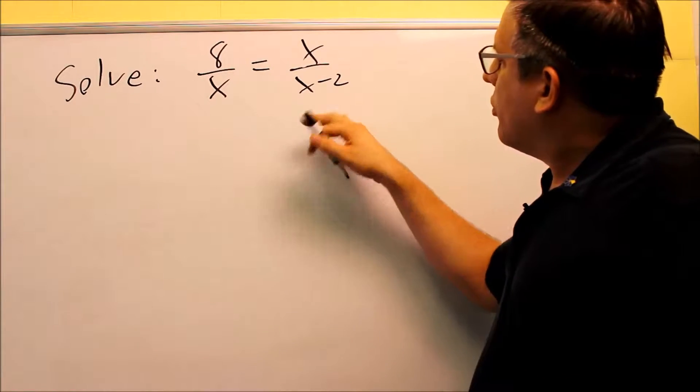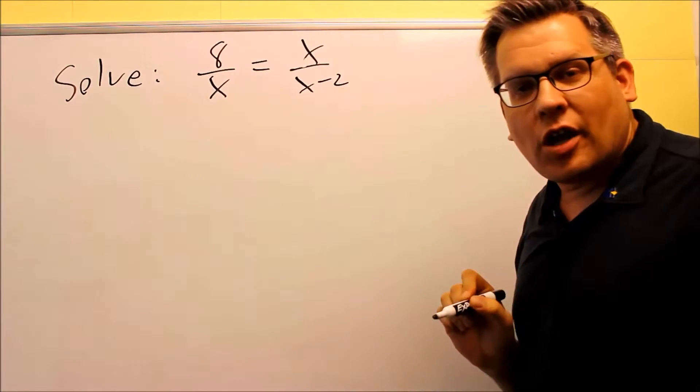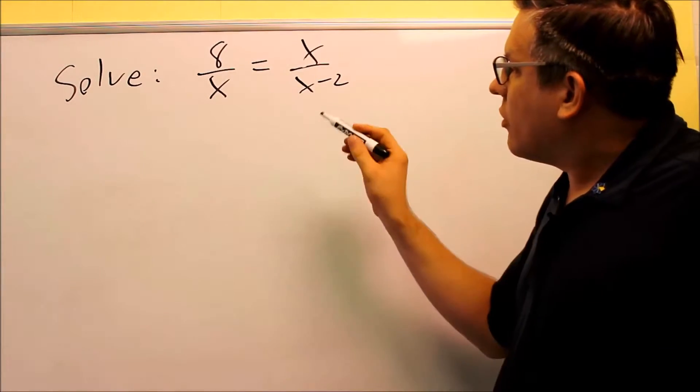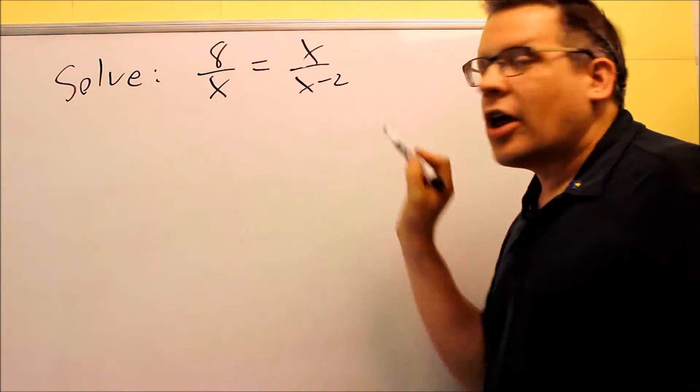So what you're going to do is you're going to take one diagonal, multiply them together, and you're going to have it equal to the product of the other diagonal.